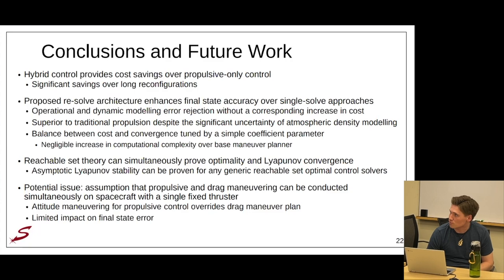Overall, and especially in terms of future work, reachable set theory has been shown to simultaneously be able to prove optimality and Lyapunov convergence such that asymptotic Lyapunov stability can be proven for any generic reachable set optimal control solvers. One major potential issue of this work and a major assumption that's used is that propulsion and differential drag maneuvering can be conducted simultaneously on Swarm X spacecraft with a single propulsive thruster. In practice, this will be mitigated by overriding the attitude maneuvering for differential drag with the attitude maneuvers required to accomplish propulsive control. And given the low instantaneous magnitude of differential drag, this should have a limited impact on the final state error that the architecture itself should be robust to in the first place.